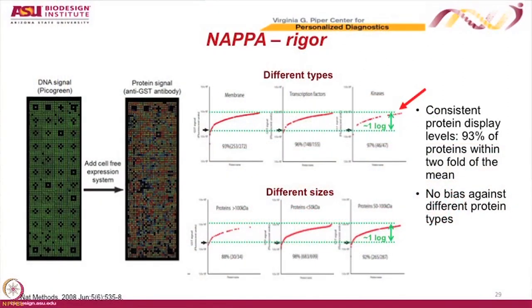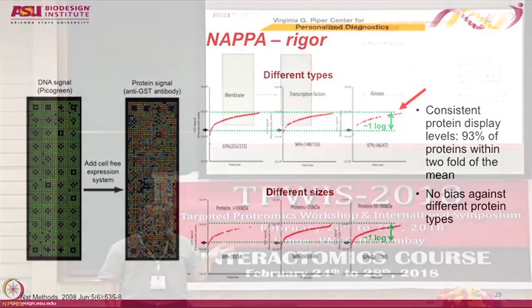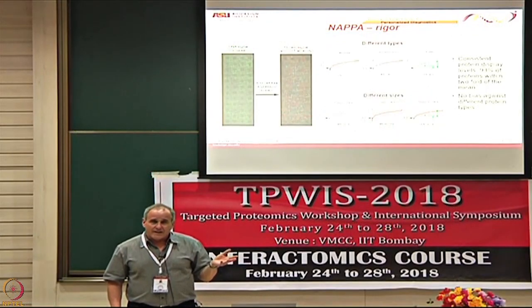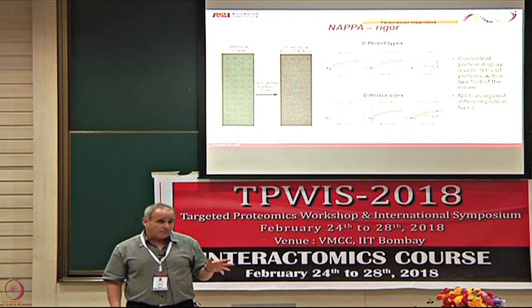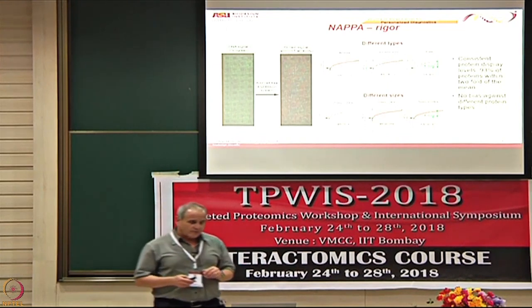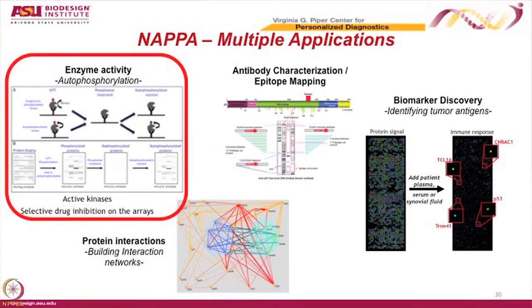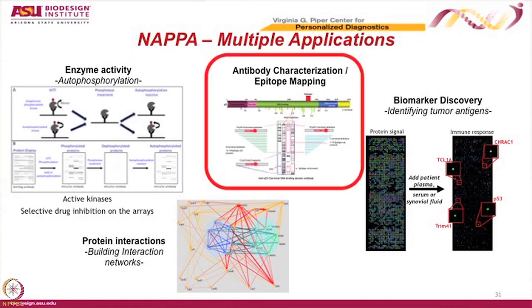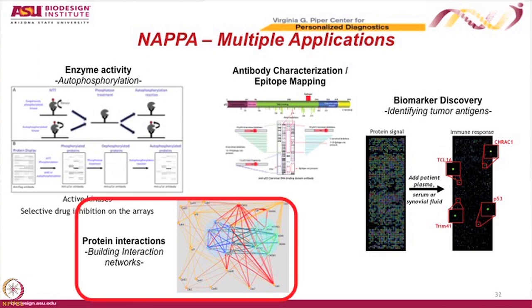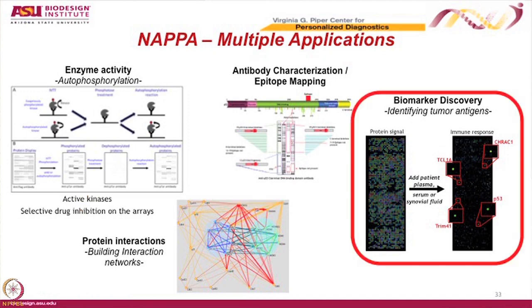It's key, if you're going to do a clinical study, to know that there are no biases against specific protein types — that would be a problem when drawing conclusions. We've also done work on protein phosphorylation and mapping protein domains. Now I'm going to focus more on biomarker discovery.